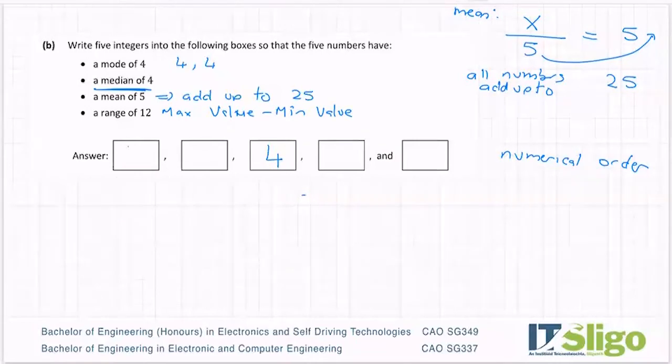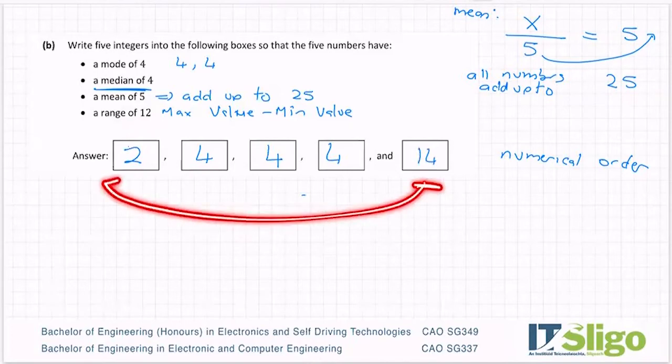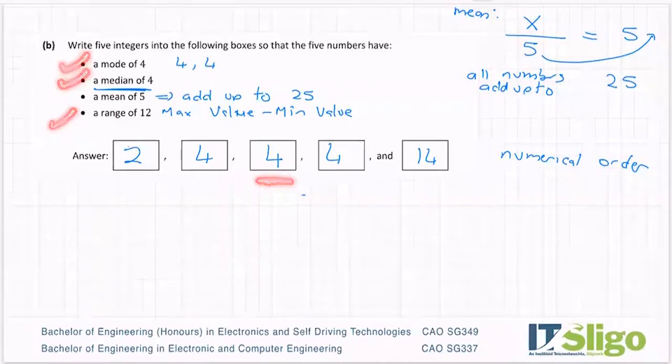So they have to add up to 25. So what happens if I put 4, 4, 4 in there? And I put a 2 there. My range needs to be 12. So if he's 2, he needs to be 14. So that 14 minus 2 gives me range. So I'm happy I've met the range. I'm happy that I've met the mode of 4. I'm happy that I've met the median being 4. Have I met a mean of 5 with my guess?